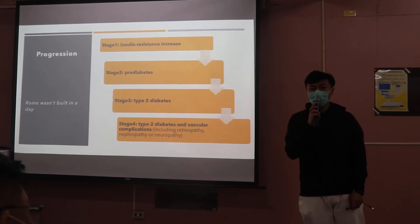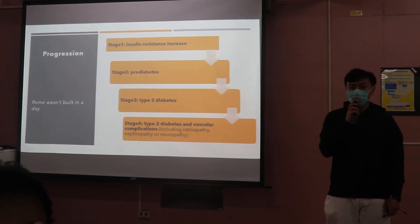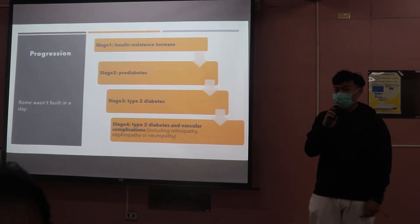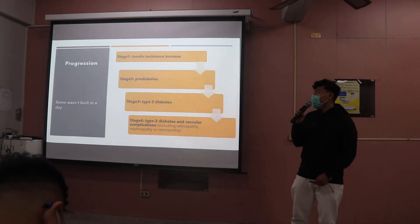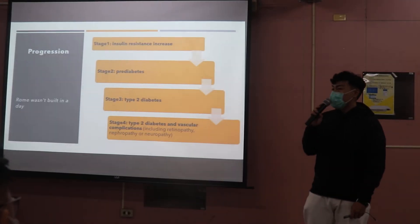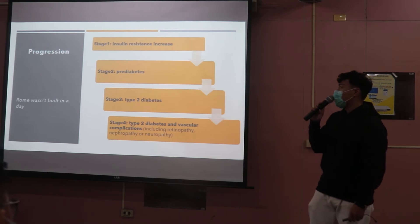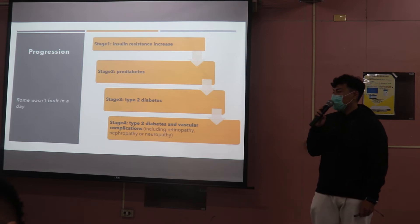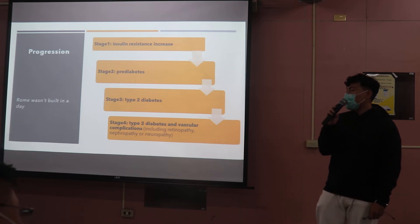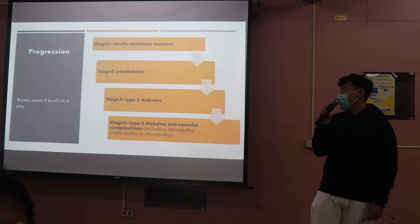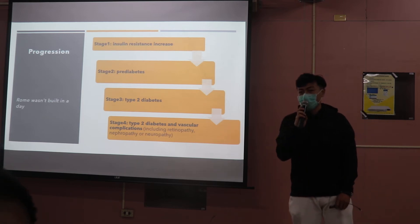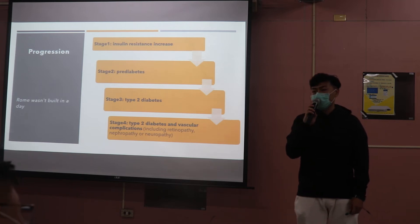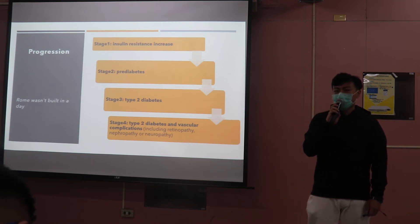According to the American Association of Endocrinologists, Type 2 diabetes is divided into four stages. Stage 1 is insulin resistance increase. Stage 2 is prediabetes. Stage 3 is Type 2 diabetes. Stage 4 is diabetes with vascular complications. Stages 1 to 3 depend on insulin levels in the blood, while Stage 4 is defined by clinical symptoms.